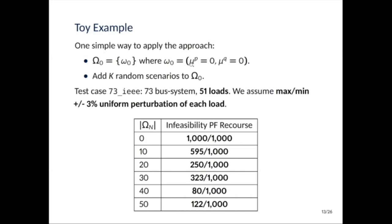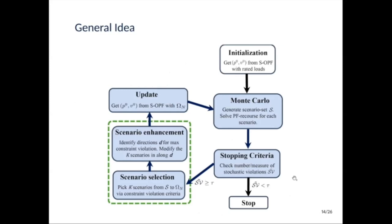Let's start with a toy example to see if this approach would work. As I said, we initialize with omega zero being the deterministic solution, and we'll add k random scenarios to omega zero. The test case is a 73 bus test case from IEEE and the MathPower library, where we have 51 loads. And we will assume that the load can uniformly be perturbed by plus or minus 3% at most. And this is the infeasibility power flow recourse we get. So this is the number of times the power flow recourse is infeasible on the scenario set S that we generated. And we see that we're getting better and better when adding scenarios. But already with 50 scenarios, we have more than 10% failure, which shows that this method won't work. So we need to do something more intelligent than what we are currently doing.